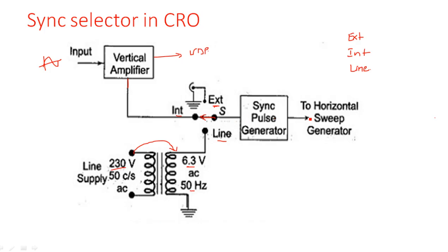The external, internal, and line switch can select any one of these three. The output passes through a sync pulse generator and then to the horizontal sweep generator. In this way we can select the synchronous signal. The purpose of the sync selector can be better understood in the context of the sampling oscilloscope.